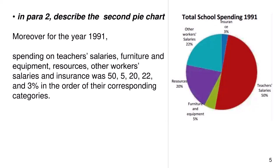In para 2, describe the second pie chart. Moreover, for the year 1991, spending on teachers' salaries, furniture and equipment, resources, other workers' salaries and insurance was 50, 5, 20, 22 and 3% in the order of their corresponding categories.